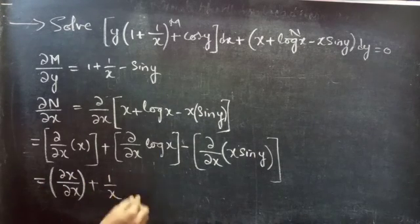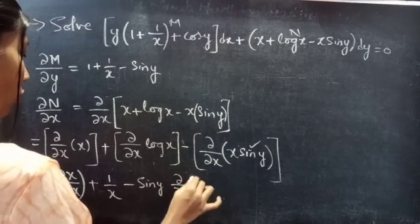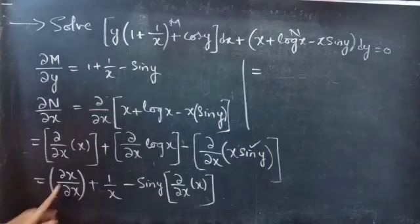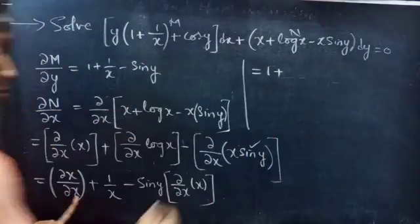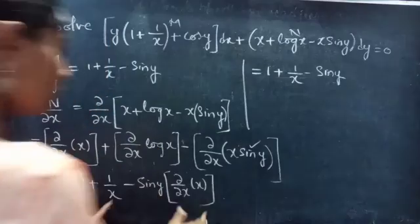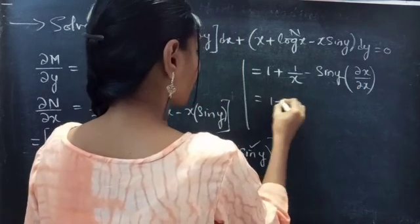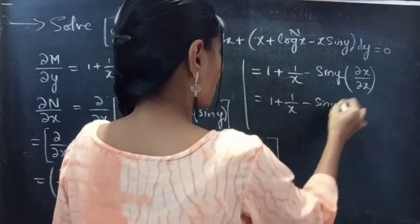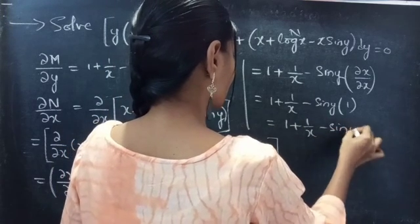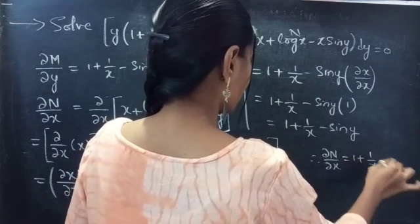The partial derivative of log x is 1 by x. sin y is constant, so constant into partial derivative of x with respect to x is 1. This equals to 1 plus 1 by x minus sin y into 1, which equals to 1 plus 1 by x minus sin y. Therefore, the partial derivative of N with respect to x is 1 plus 1 by x minus sin y.